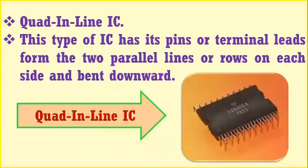Then we have the quad inline IC. This type of IC has each pin or terminal lead forming two parallel lines or rows on each side, bent downward.